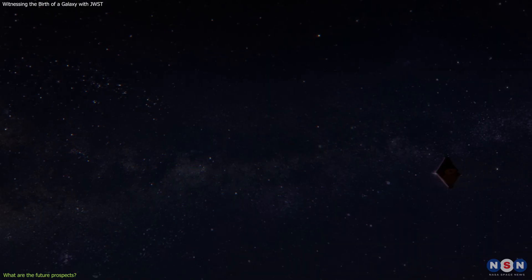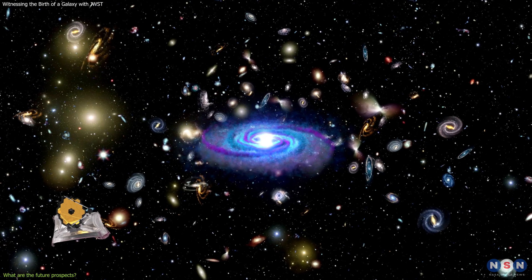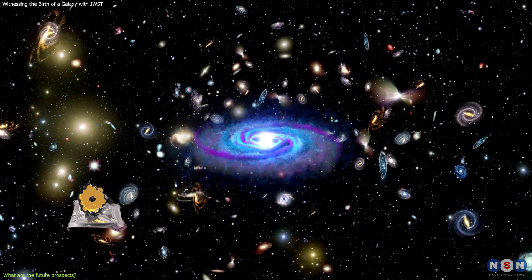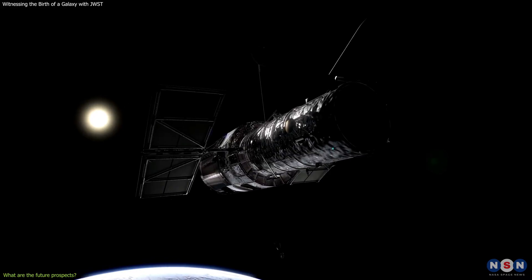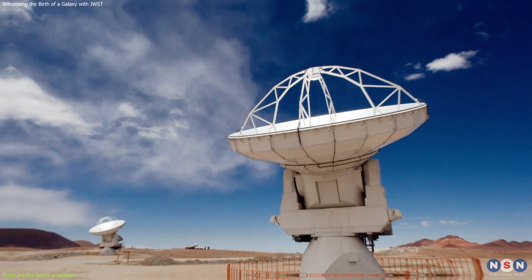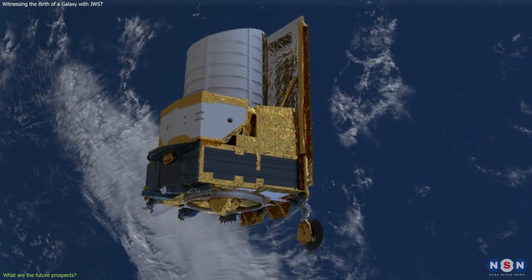Webb is expected to operate for at least 10 years, during which it will continue to observe these galaxies and many more. It will also be complemented by other telescopes on the ground and in space, such as ALMA, SKA, Euclid, and more.